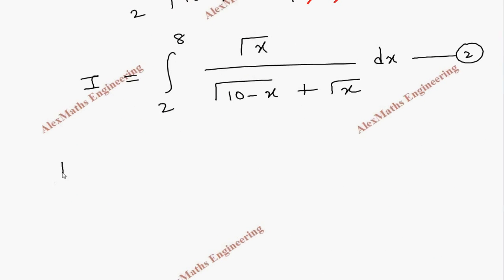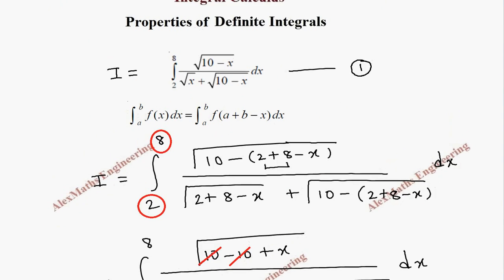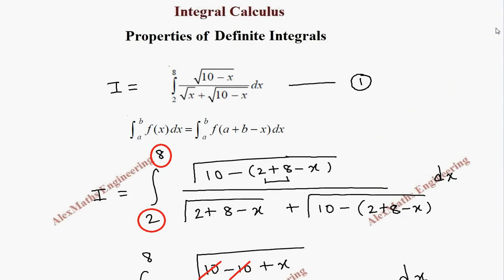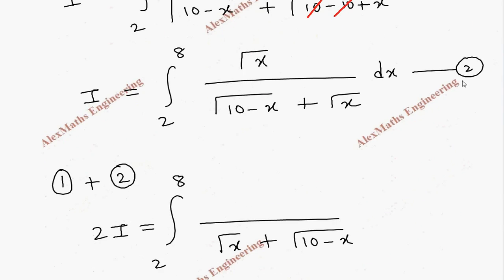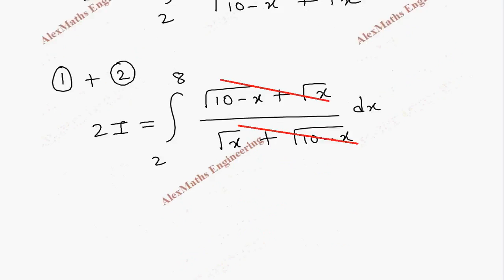Now adding equation 1 and equation 2, we get 2I equals integral from 2 to 8, with common denominator root(x) plus root(10 minus x). The numerator becomes root(10 minus x) plus root(x), which cancels with the denominator. We are left with just dx.